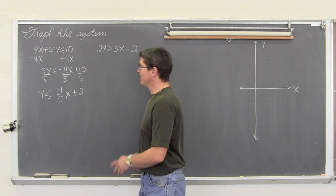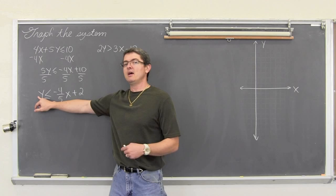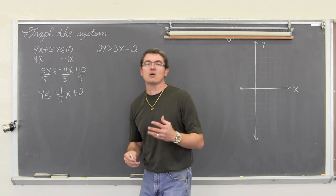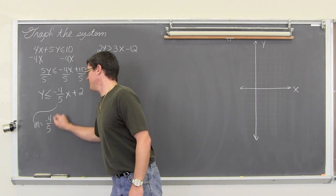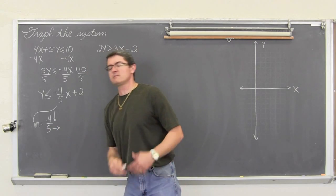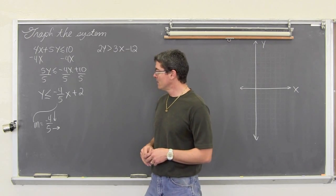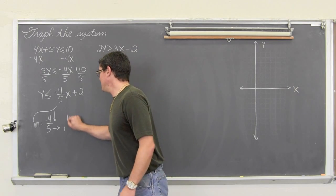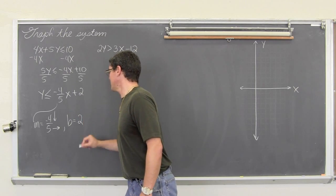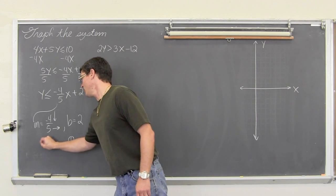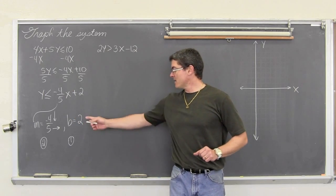We get y is less than or equal to negative 4/5 x plus 2. Now that we have it in slope-intercept form, it is y is less than or equal to, so it will be a solid line. Because my y term is alone, y is less than means we are going to shade down, because that is the way y values get smaller. The slope is negative 4/5, so we go down. I teach slope going left to right, always to the right for the run value in the denominator. And b, our constant, is our y-intercept, which equals 2.